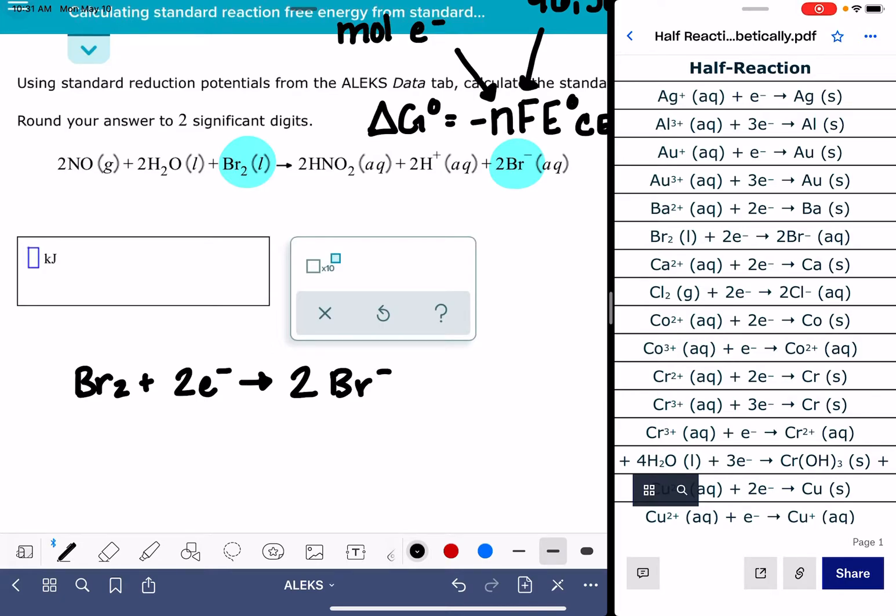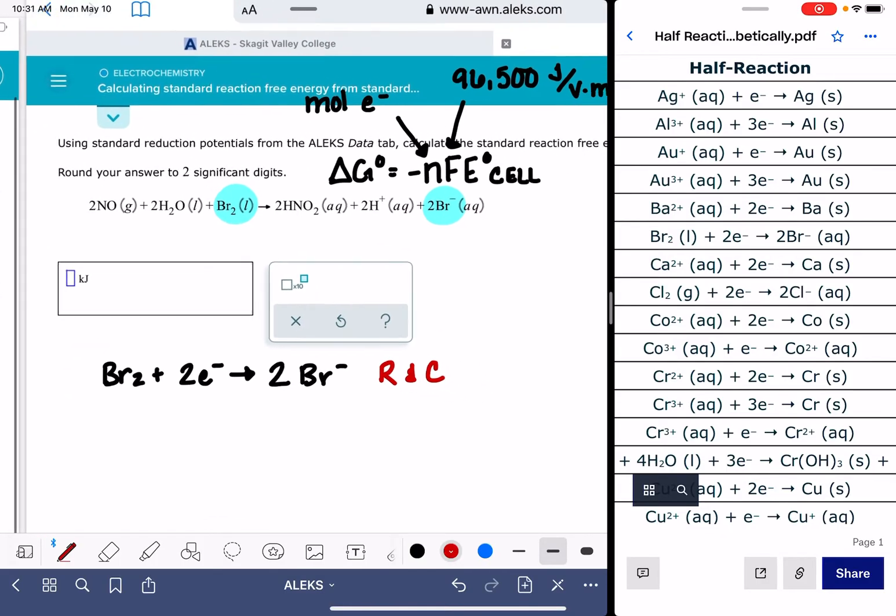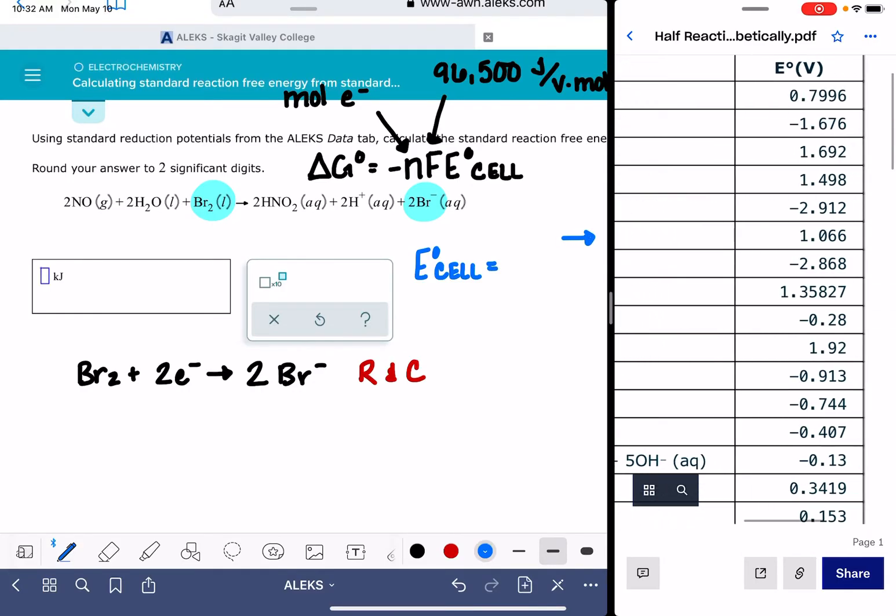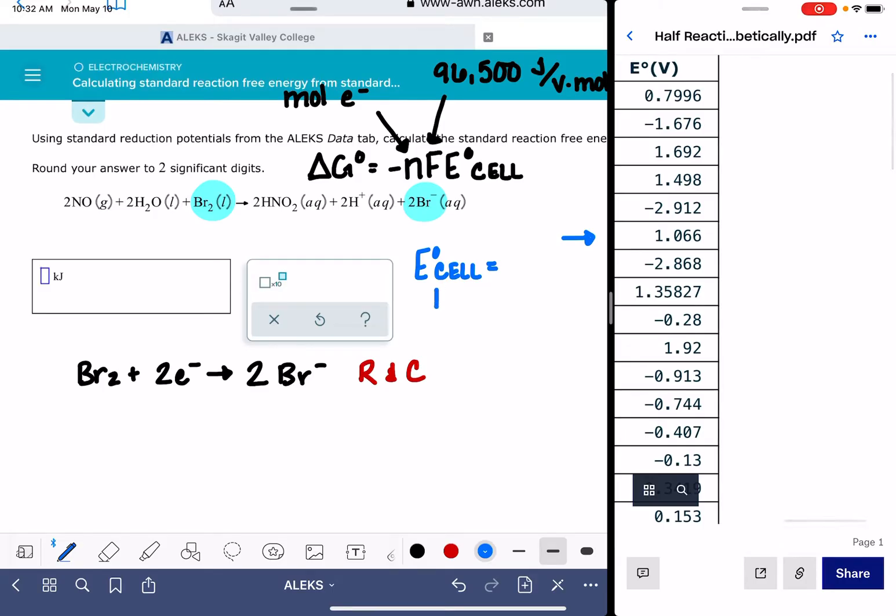This is a reduction reaction because electrons are being gained. And that means that it is taking place at the cathode, which means that when I calculate E cell, cathode minus anode, I want the voltage for this reaction to come first. So I'm going to grab the voltage of this reaction. It is 1.066 volts.